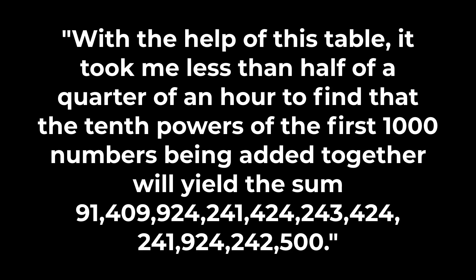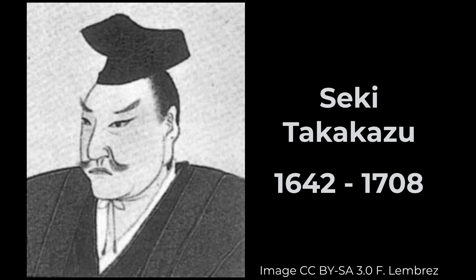Now, Bernoulli was very smug about this discovery. He said, with the help of this table, it took me less than half of a quarter of an hour to find that the tenth powers of the first 1,000 numbers being added together will yield the sum this, which is quite impressive. You know, this is definitely a step forward. And it's a brilliant discovery. Although potentially not necessarily Bernoulli was the first person to discover this. As always, this is a mathematician from Japan, Seki Takakazu, who discovered these numbers and published about a year before Bernoulli did. But for some reason, they're called the Bernoulli numbers.